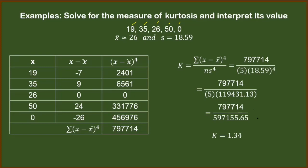Next, compare this number to 3. Obviously, 1.34 is less than 3, meaning just like the first example, this second example is also a platykurtic distribution.